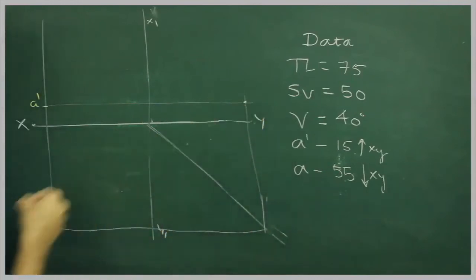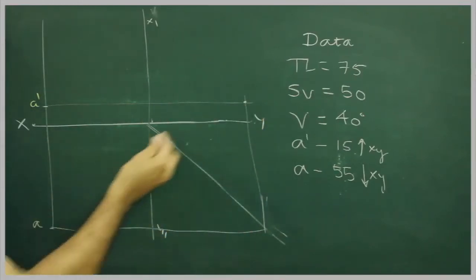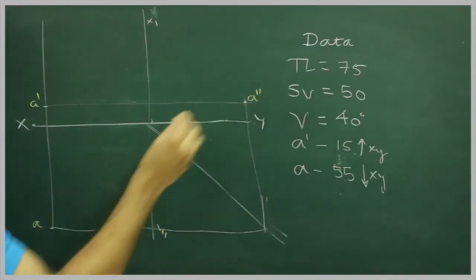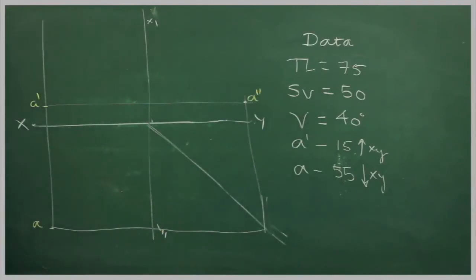So wherever it will intersect, that point would be B double dash. Now there will be an inclination with side view.